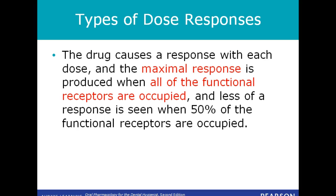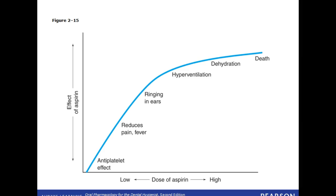Less of a response can be seen when only half of the functional receptors are occupied. In this dose-response relationship, you can see that as the dose of the drug increases, a maximal response or a plateau is reached. If you increase the drug dose, no additional therapeutic response is produced.